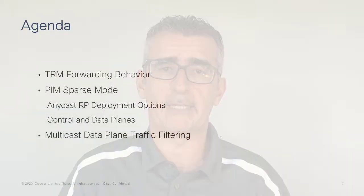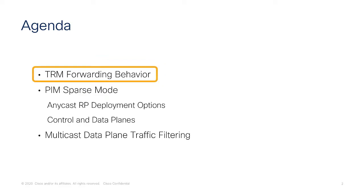In this module of the ACI multi-site training, we are going to introduce the concept of tenant routed multicast, essentially how layer 3 multicast traffic can be forwarded across different fabrics that are part of the same multi-site domain. We're going to first discuss the TRM forwarding behavior and see how multicast traffic can be forwarded with or without enabling tenant routed multicast, and the differences between the two models.